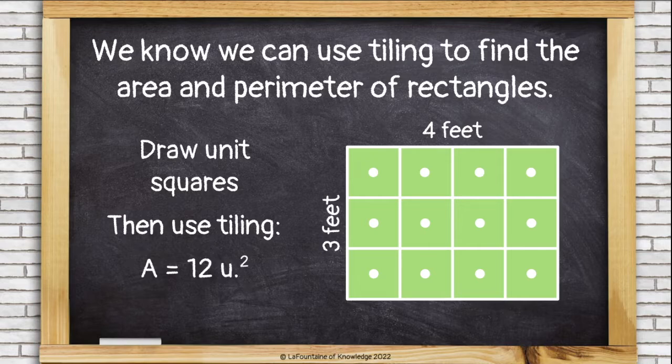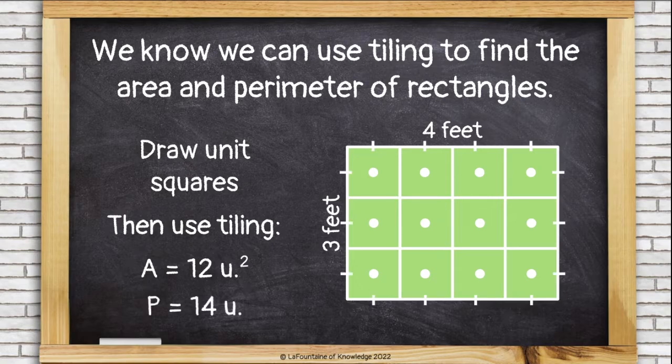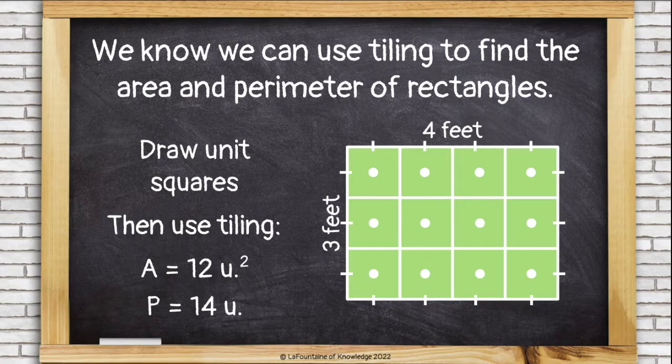For perimeter, we'll count the edges of the squares that touch the edge of the rectangle. 1, 2, 3, 4, 5, 6, 7, 8, 9, 10, 11, 12, 13, 14. The perimeter of this rectangle is 14 units.